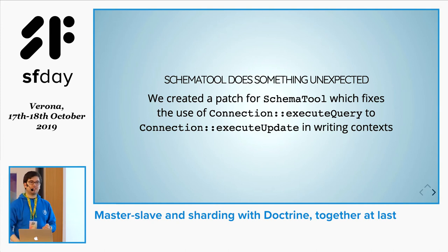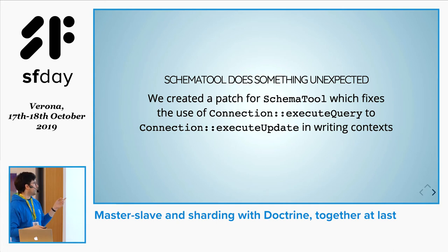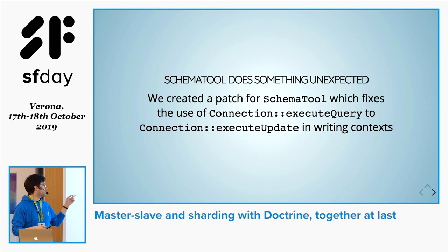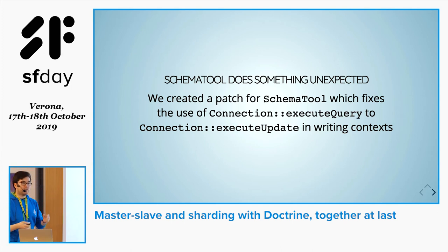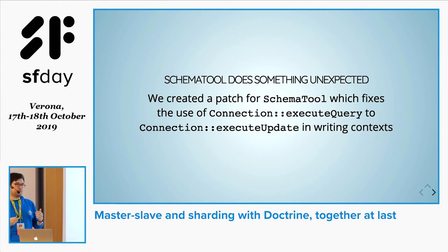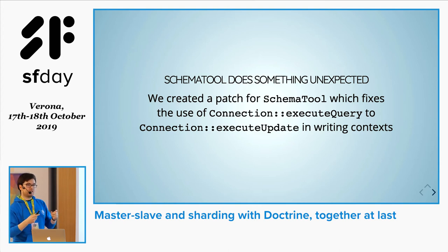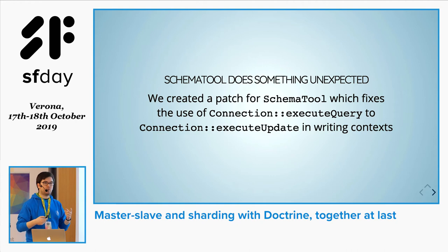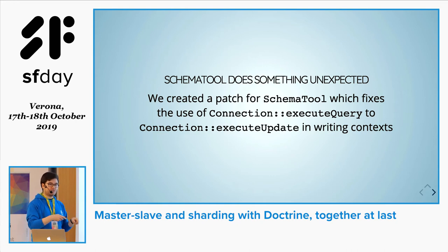Another issue we found was with Schema tool, a class used mainly in the migrations library. For some reason it calls executeQuery instead of executeUpdate. ExecuteUpdate is supposed to handle inserts, deletes, and updates, whereas reading queries go through executeQuery. The problem was Schema tool was sending updates and deletes using executeQuery. In a master-slave environment you want to be reading from the slave, not writing — going through executeQuery meant we were writing onto the slaves, which was a problem.